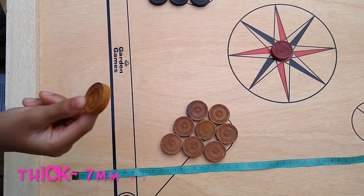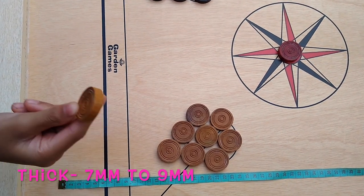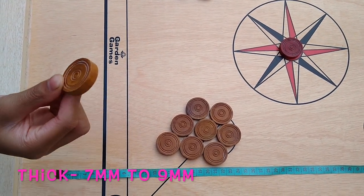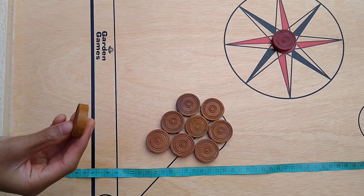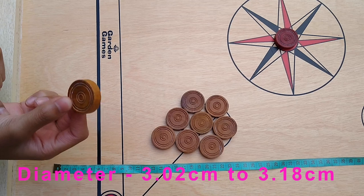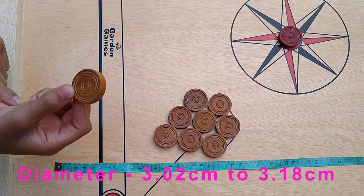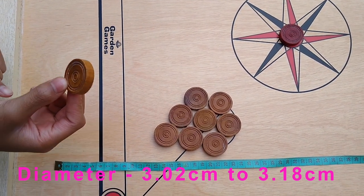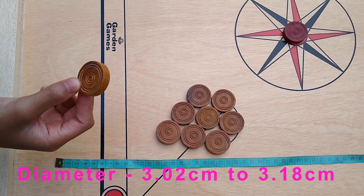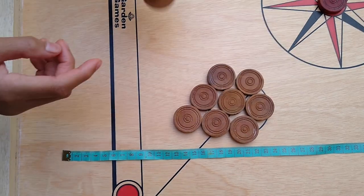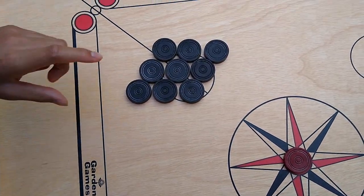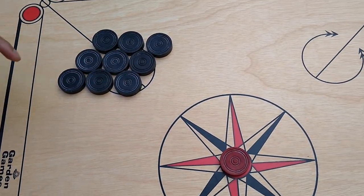The Carrom piece must be between 7 millimeters and 9 millimeters thick. The Carrom piece has a diameter of 3.02 centimeters to 3.18 centimeters. All of these discs have to be the same size no matter what color they are.